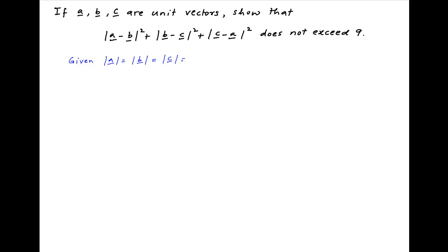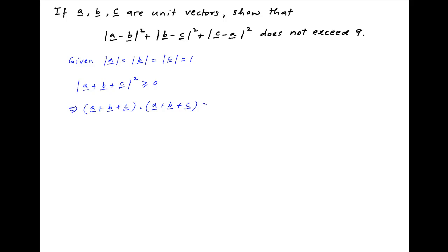Vectors a, b, and c are unit vectors; therefore their absolute values are equal to 1. Note that the absolute value of vector a plus b plus c, squared, is always greater than or equal to 0. This implies that the dot product of vector a plus b plus c with itself is always greater than or equal to 0.